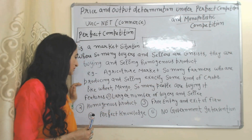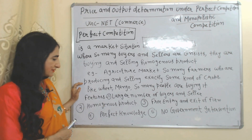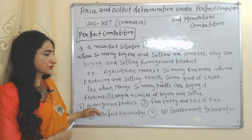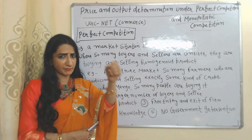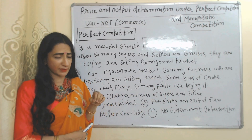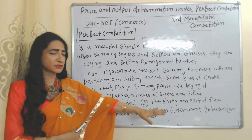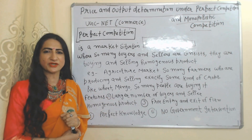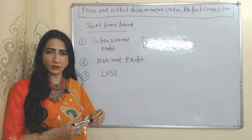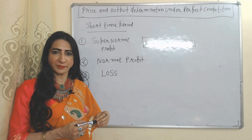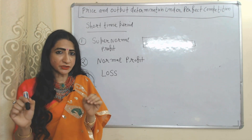Features of perfect competition are: large number of buyers and sellers, they are selling homogeneous products, there is free entry and exit of firms, consumers have perfect knowledge about the product, and there is no government intervention. Now we will see price and output determination under perfect competition during the short time period.